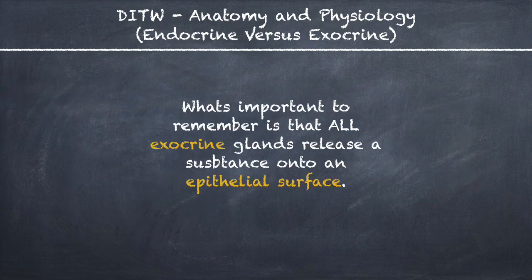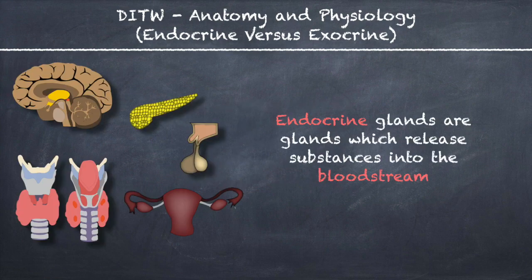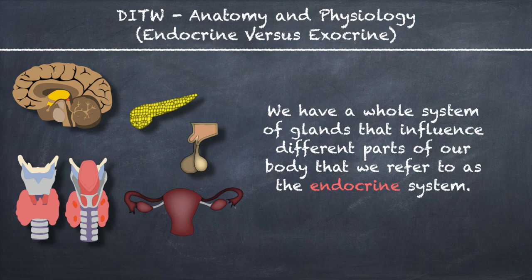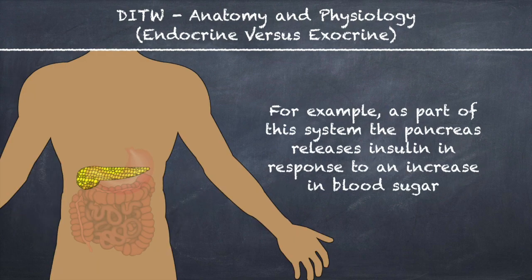All exocrine glands release a substance onto an epithelial surface. Endocrine glands are glands which release substances into the bloodstream — the vast network of arteries and veins which make up our entire cardiovascular system. We have a whole system of glands that influence different parts of our body, referred to as the endocrine system. For example, the pancreas releases insulin in response to an increase in blood sugar.